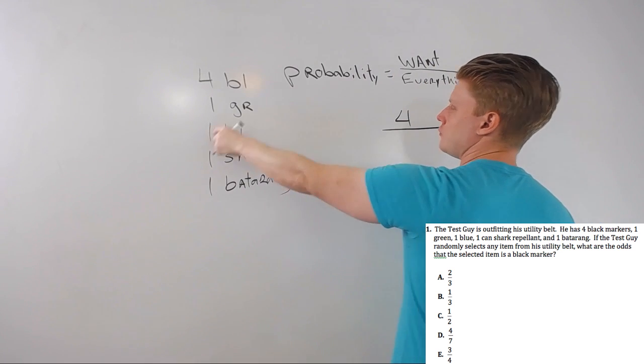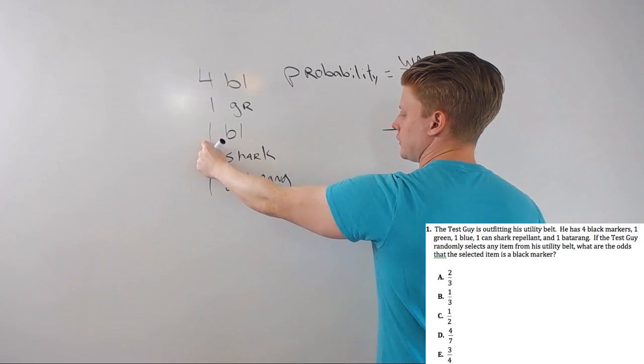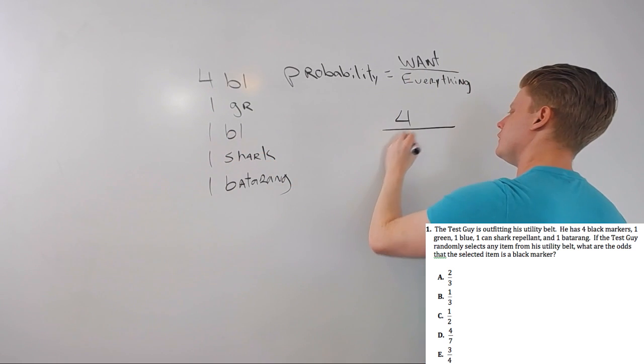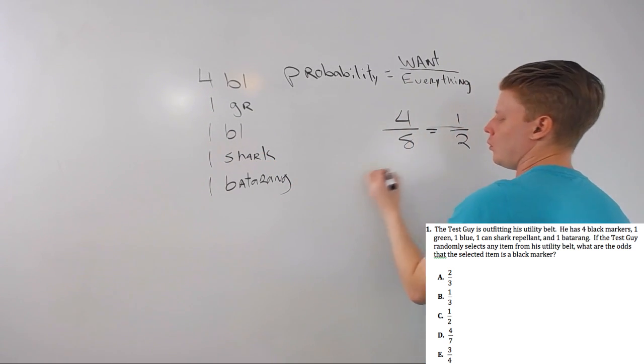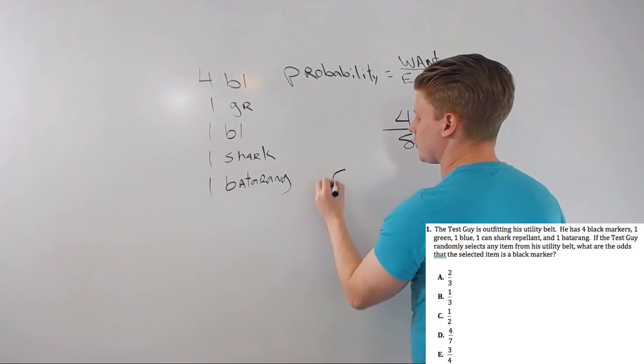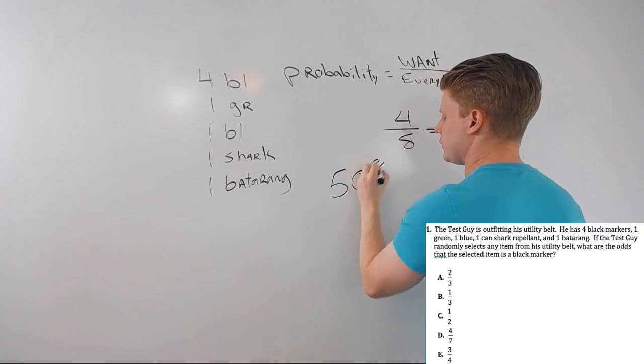Everything is four items plus one plus one is six, plus one plus one is eight. Four over eight equals one-half, or 50% chance. Answer choices are commonly in terms of fractions.